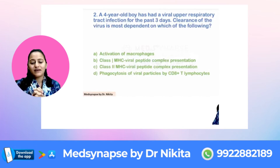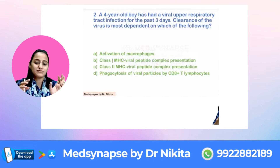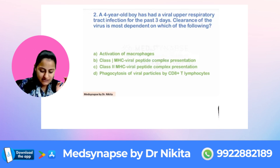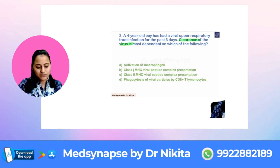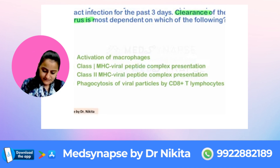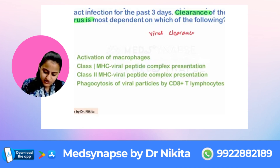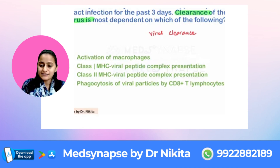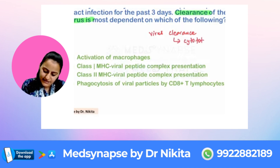A four-year-old boy has a viral URTI for the past three days. The clearance of the virus is dependent on which of the following? The question is on virus clearance. Remember that virus clearance — we are basically talking about cytotoxic T cells.